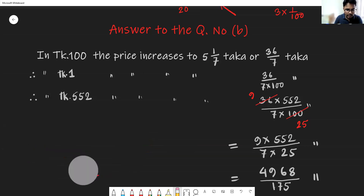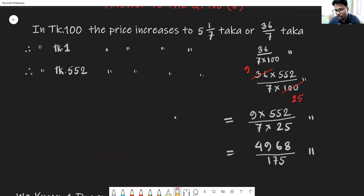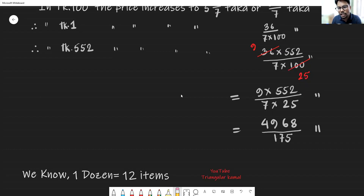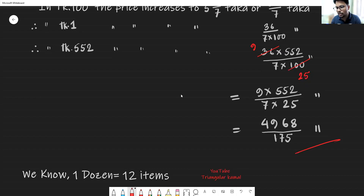Now doing a simple calculation: 36 is divided by 4 and also 552 is divided by 4 — 36 divided by 4 gives 9, and 552 divided by 4 gives 138. Since there is no common divisor among 9, 138, 7, and 25, we multiply all numerator numbers and all denominator numbers separately to get the price increase at 552 Taka.